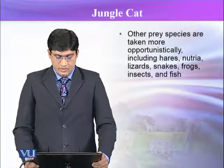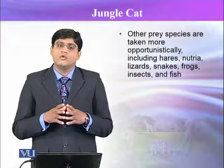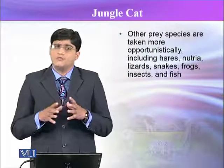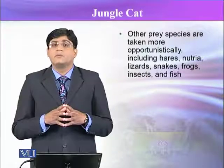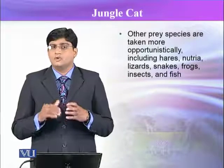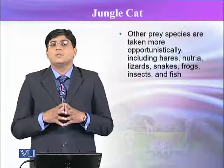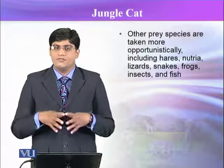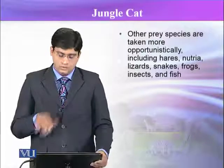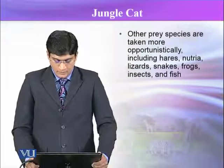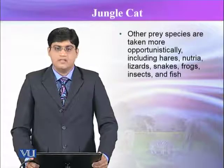Other species in the diet are opportunistic — if they are available the cat will take them, but it is not necessary that they capture these species. These opportunistic prey items include lizards, snakes, frogs, insects, and fish.